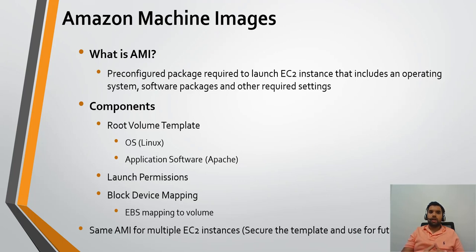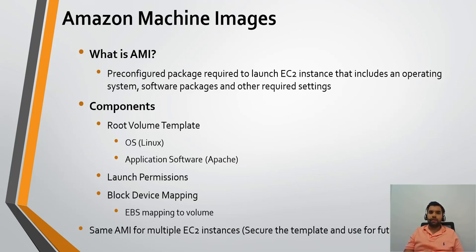Launch permissions define who can launch an EC2 instance using a particular AMI, controlling who has access. Block device mapping handles the EBS mapping to the storage volume, which we'll discuss later. Organizations with multiple servers to spin up generally create one AMI template and reuse it for all remaining machines, rather than creating multiple AMIs from scratch. Let's jump into the management console and see how the AMI and EC2 instance look.